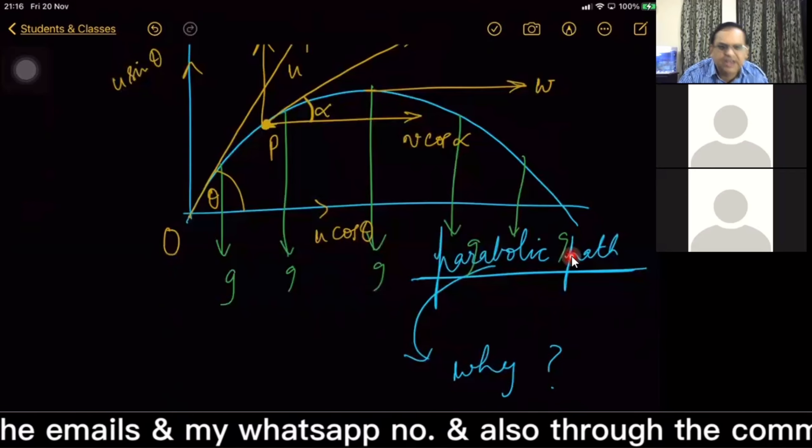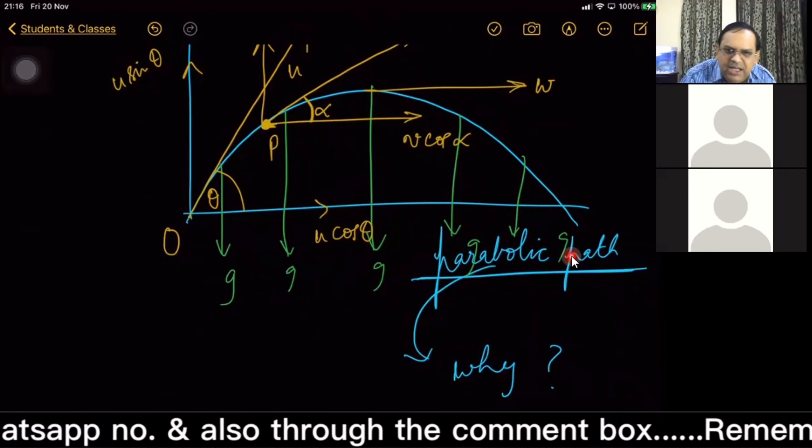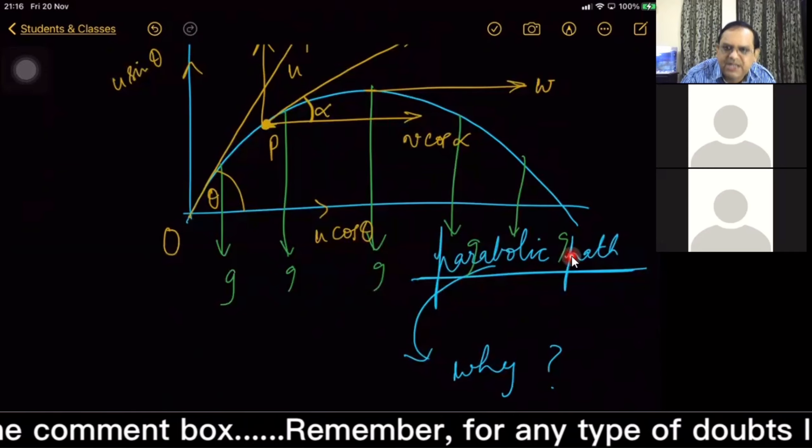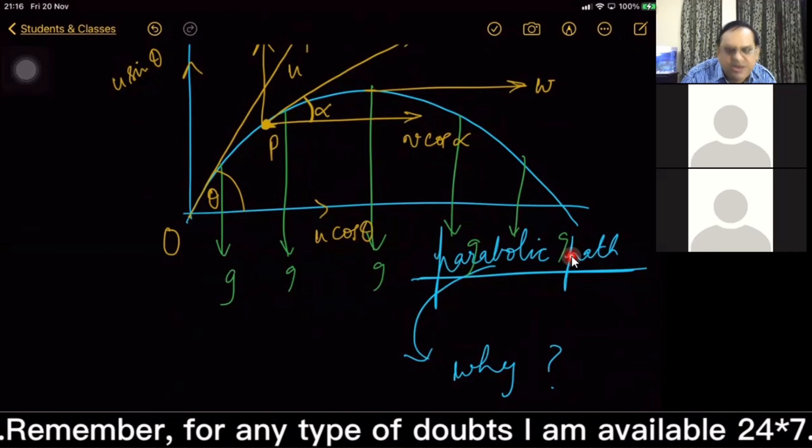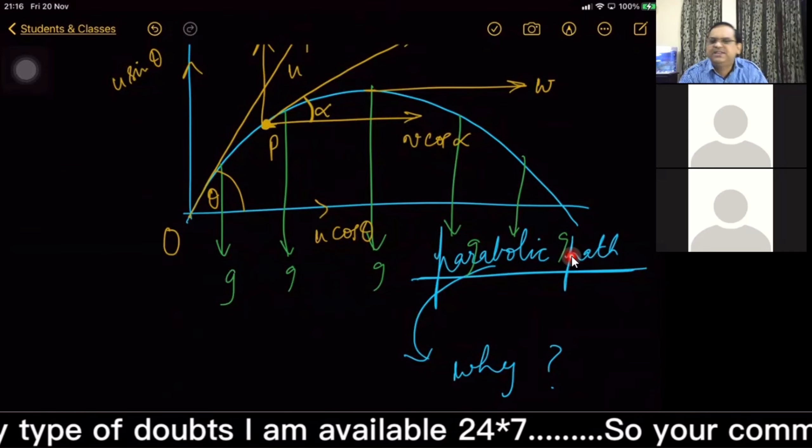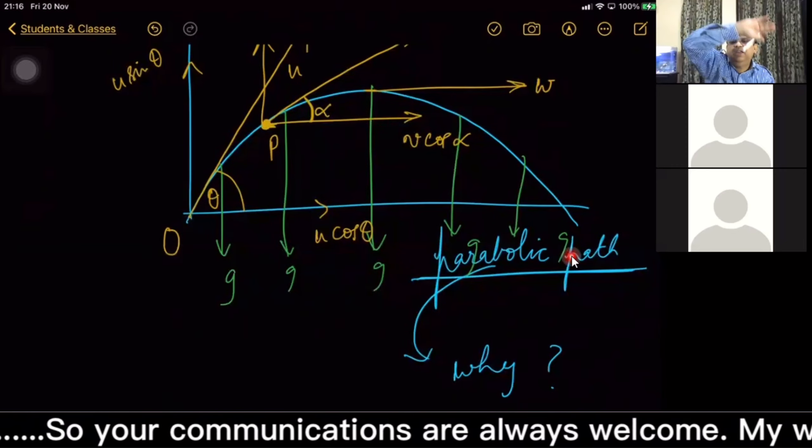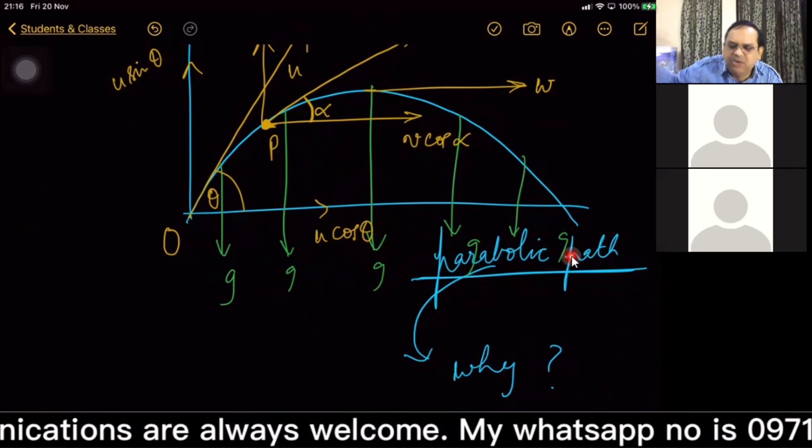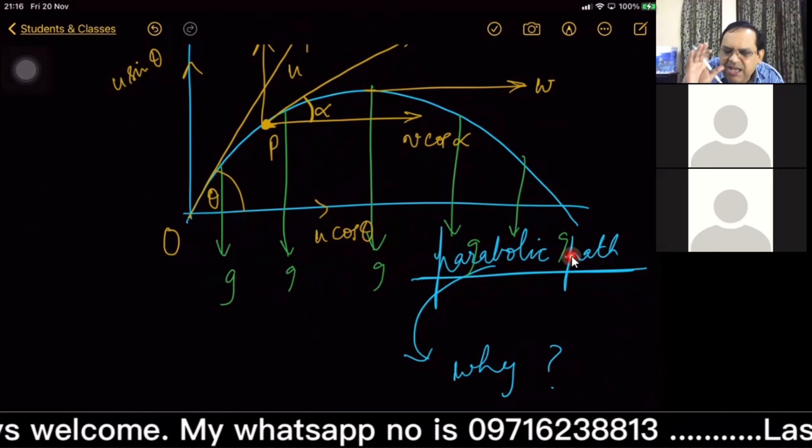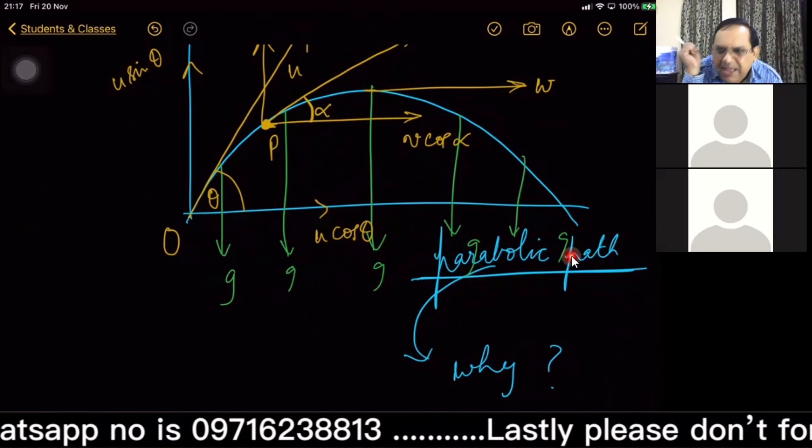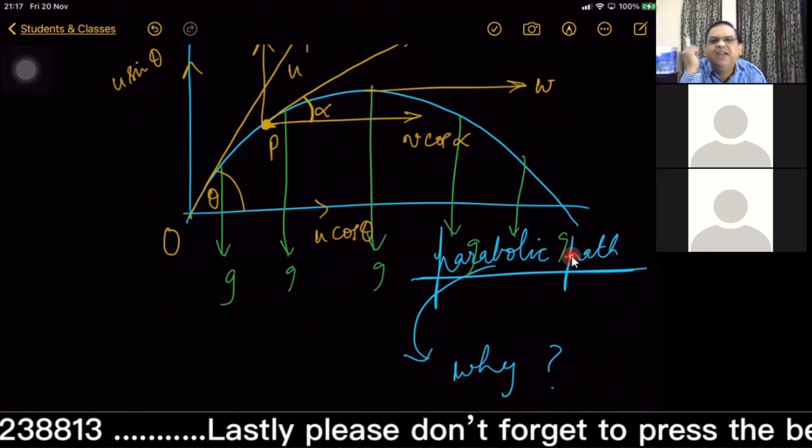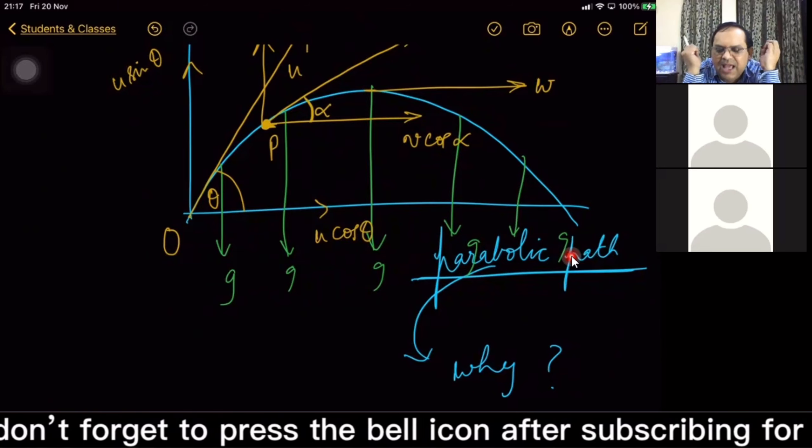Definitely, theoretically, of course, because of vertically downward constant acceleration it is compelling that whole thing covering parabolic path. But do we have any type of special mathematical derivation for that, mathematical proof for that?